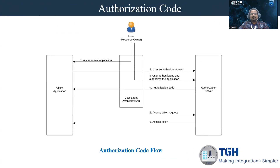In case of authorization code, there is a user, but rather than giving the client application the username and password directly, the user validates it themselves. The request contains a client ID and client secret, and the user has to provide the username and password to authorize the server. Once it is authorized, an authorization code is returned. Using this authorization code, another call goes to a token server which provides the access token, and after getting the access token, a call is made for the resource.